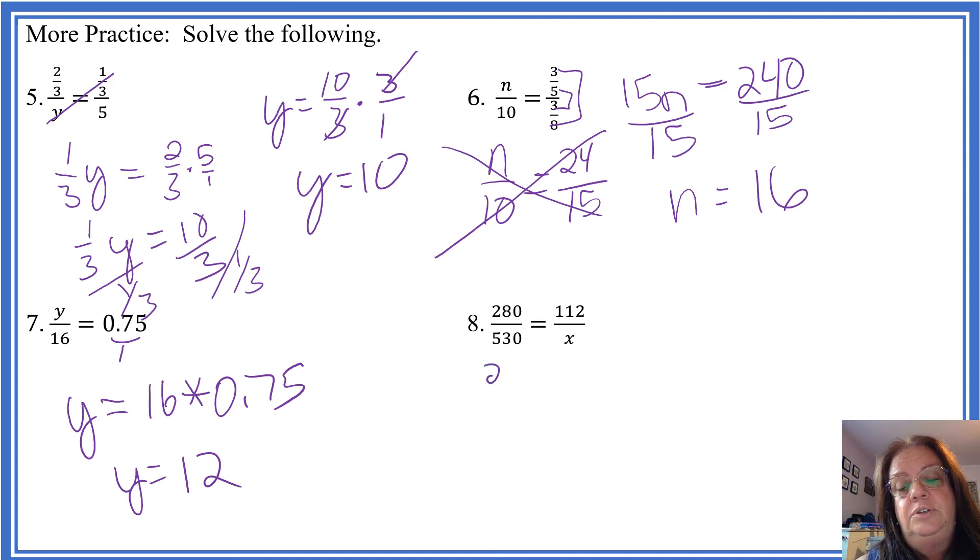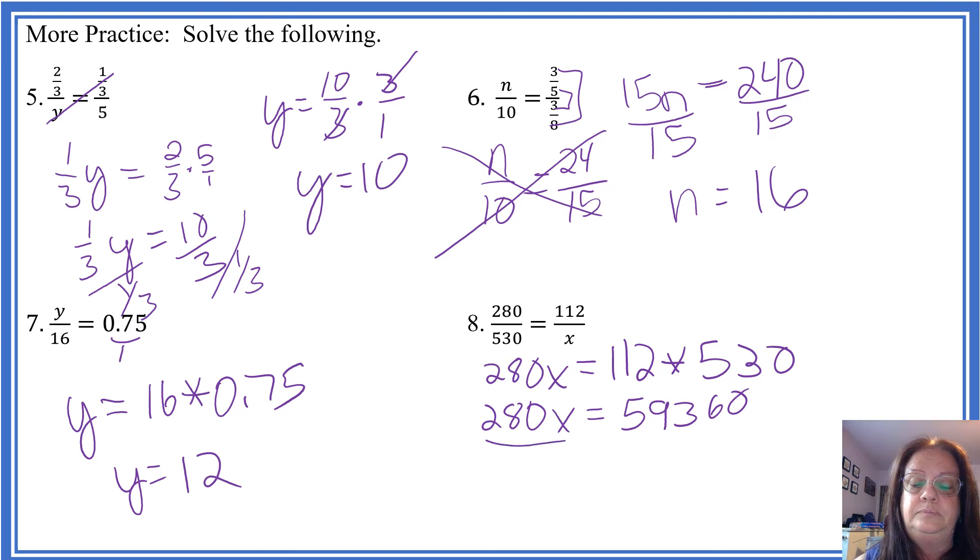280x equals 112 times 530. So 112 times 530, I get 59360. We're going to divide both sides by 280. There we go. And we're all finished with this one.